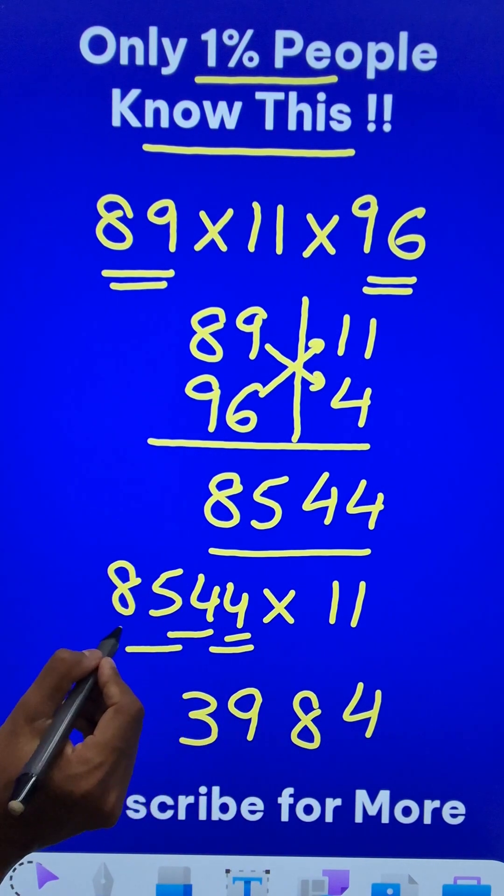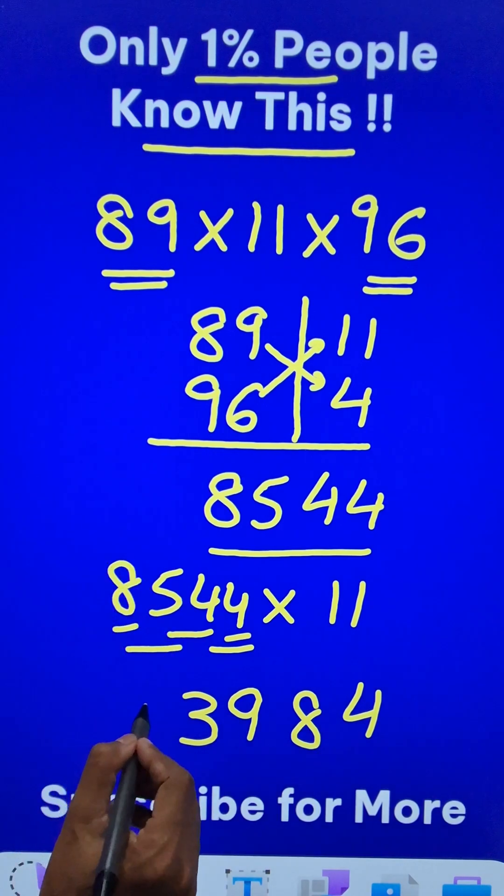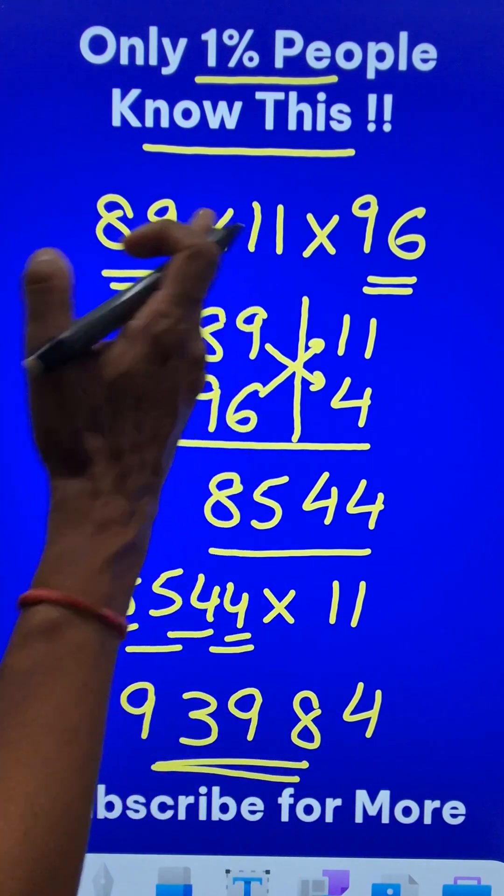And we are done with all the pairs. So take the first digit and add the carry number 8 plus 1, 9. And now pick up the calculators and check your answer.